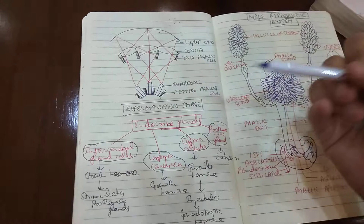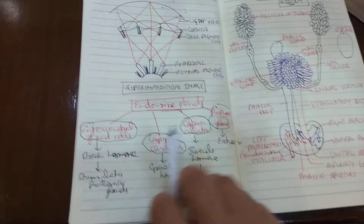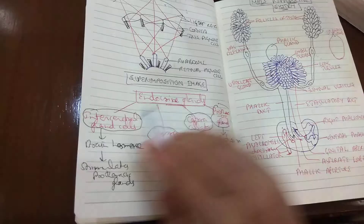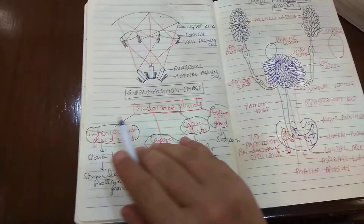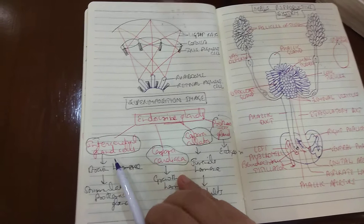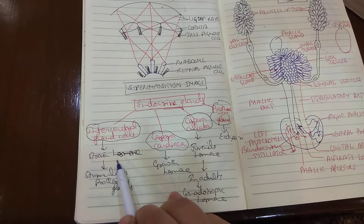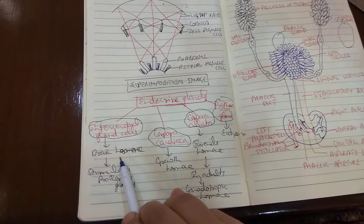Then comes the endocrine glands. In the case of cockroach there are four kinds of endocrine glands. The first are the intercerebral gland cells — as the name specifies, 'inter' means between the two cerebral regions of the brain; they are present between the two cerebral ganglia. They secrete the hormone referred to as the brain hormone, which activates the prothoracic glands to secrete their hormone.